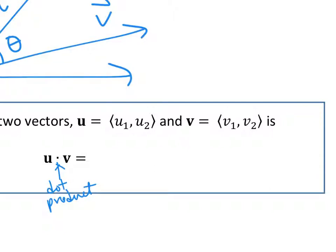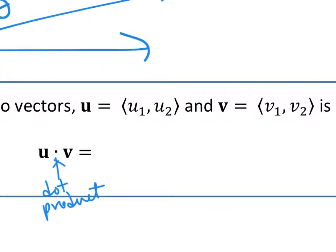When you take two vectors and dot them together, you're going to take u with components u1, u2 and v with components v1, v2. You take u1 times v1 plus u2 times v2. That's going to give you a number — a scalar.